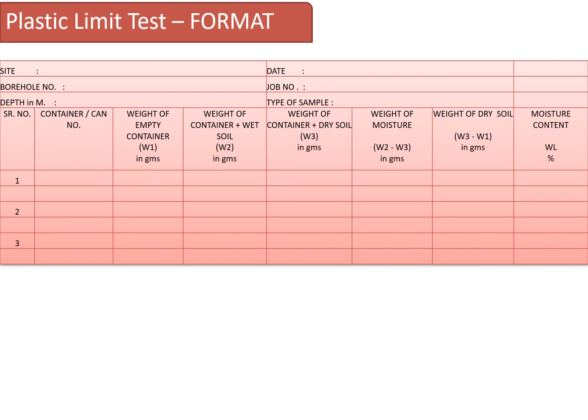The format used to tabulate the results of the plastic limit test is shown in the photograph. You record the container numbers, the weight of the empty containers as W1, weight of container plus wet soil as W2, and weight of container plus dry soil as W3. The weight of moisture is W2 minus W3, and the weight of dry soil is W3 minus W1, allowing you to determine the moisture content of that particular soil.